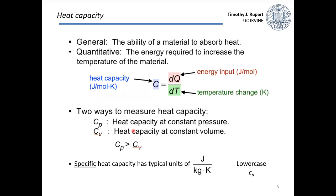Starting with heat capacity — in general, this describes the ability of a material to absorb heat. More quantitatively, we're asking what is the energy required to increase the temperature of the material. Heat capacity, usually denoted by capital C, has units of joules per mole·K. It's defined as the differential energy input dq per dT required — so how much energy input is needed to get a temperature change.